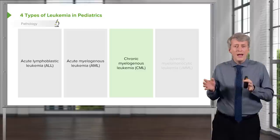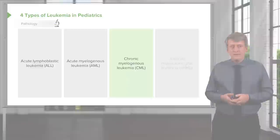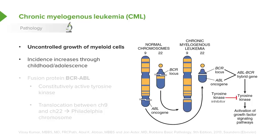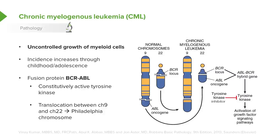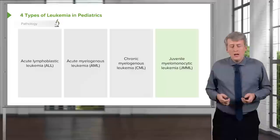Switching gears to chronic disease — chronic myelogenous leukemia, or CML, is less common in kids. This is an uncontrolled growth of myeloid cells, and the incidence increases through childhood and adolescence. Often these patients have a fusion protein, the BCR-ABL gene, which constitutively activates tyrosine kinase. The translocation between chromosome 9 and chromosome 22 causes a continuously active tyrosine kinase.